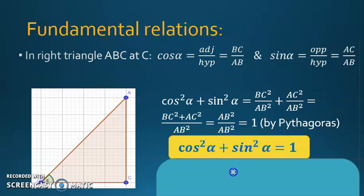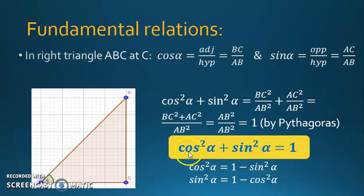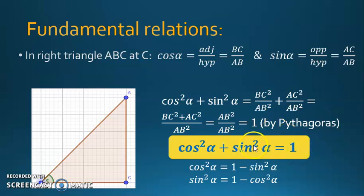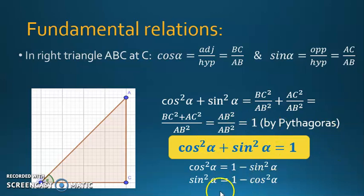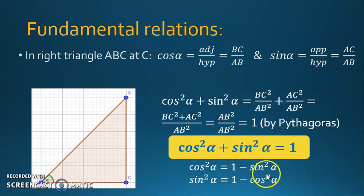So we can conclude that cosine squared alpha plus sine squared alpha equals 1. This is a very important relation. From it we can also deduce that cosine squared alpha equals 1 minus sine squared alpha, and sine squared alpha equals 1 minus cosine squared alpha. I wrote these on purpose so that when you see either of these two forms, you remember this fundamental relation.